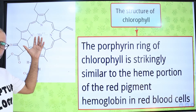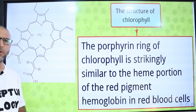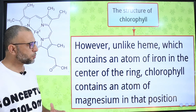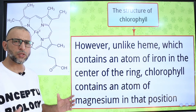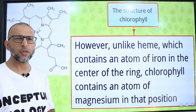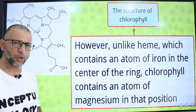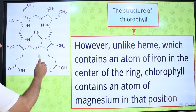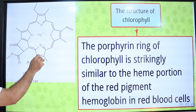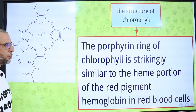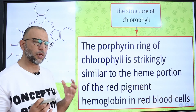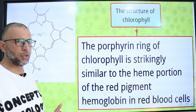The porphyrin ring of chlorophyll is strikingly similar to the heme portion of the red pigment hemoglobin in red blood cells. The difference between chlorophyll and hemoglobin is in the central atom. In chlorophyll, a magnesium atom is present at the center, whereas in hemoglobin, an iron atom is present. So the difference is only in the central atom — magnesium in chlorophyll and iron in hemoglobin.